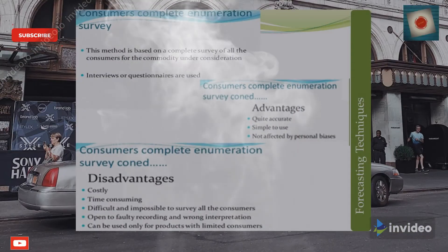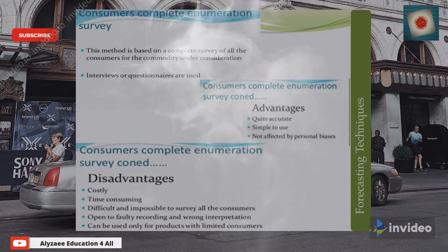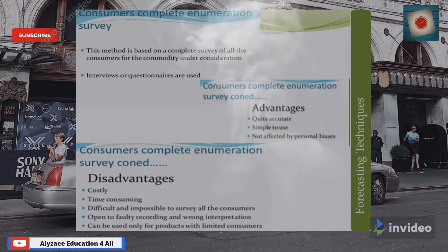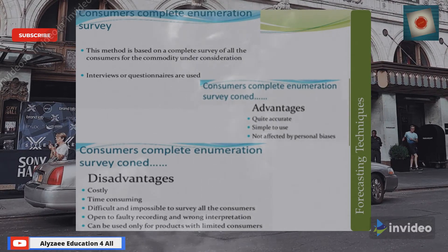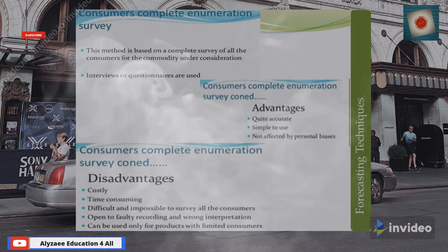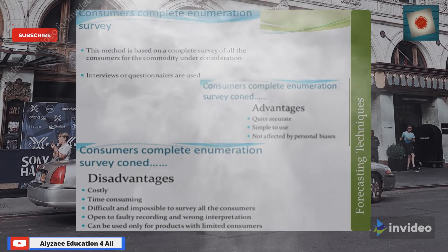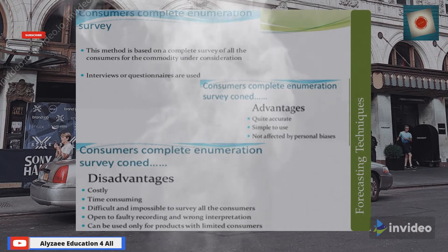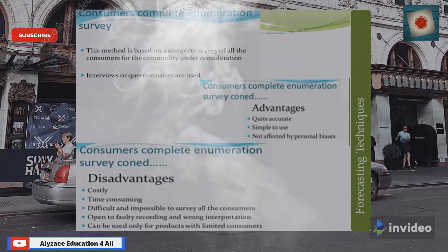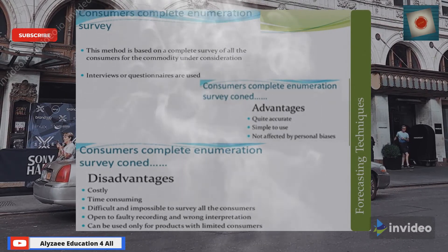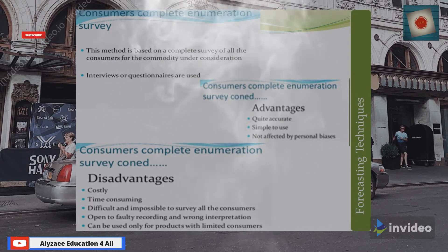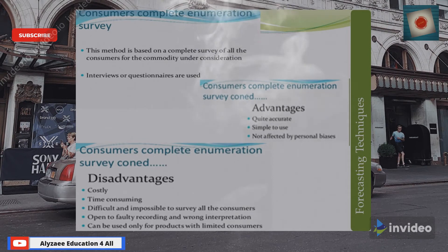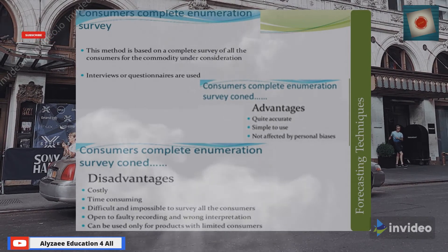In the consumer complete enumeration survey, this method is based on the complete survey of all the consumers for the commodity under consideration. Interviews or questionnaires are used. The advantages are that it is quite accurate, simple to use, and not affected by personal bias.